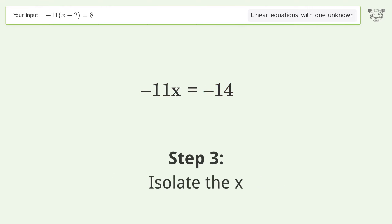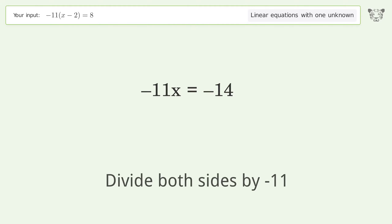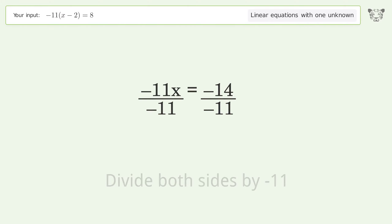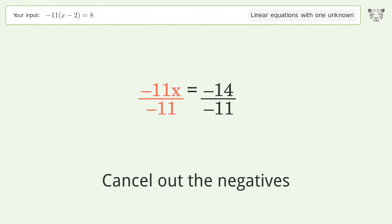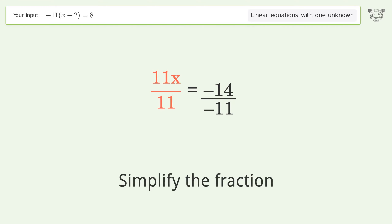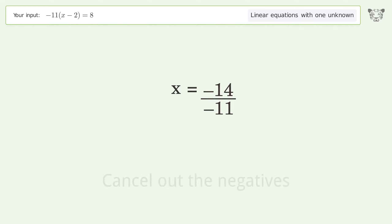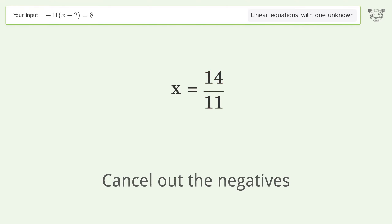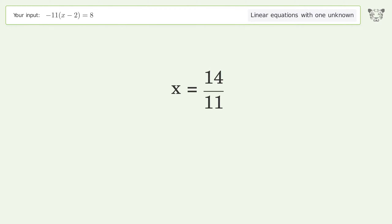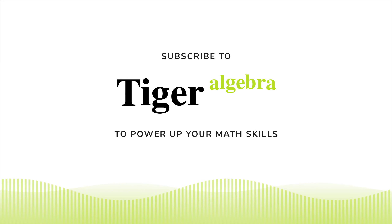Isolate the x — divide both sides by negative 11. Cancel out the negatives, simplify the fraction, cancel out the negatives again. And so the final result is x equals 14 over 11.